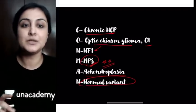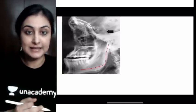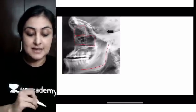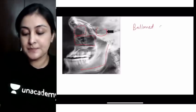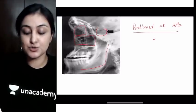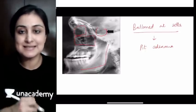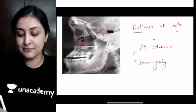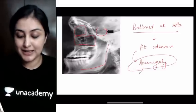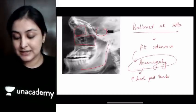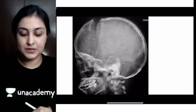In this case, we see prognathism of the mandible, increased size of the sinuses, a thickened calvarium, and an enlarged — ballooned out — sella. This ballooned-out sella appearance is associated with a pituitary adenoma. The prognathism, enlarged sinuses, and increased connective tissue are associated with acromegaly, suggesting a GH-producing adenoma. One specific feature to look out for in acromegaly is increased heel pad thickness — if you see an image of the foot with increased heel pad thickness, always think of acromegaly.